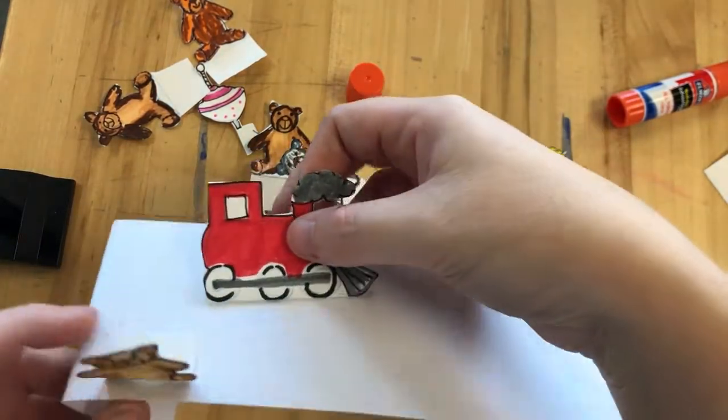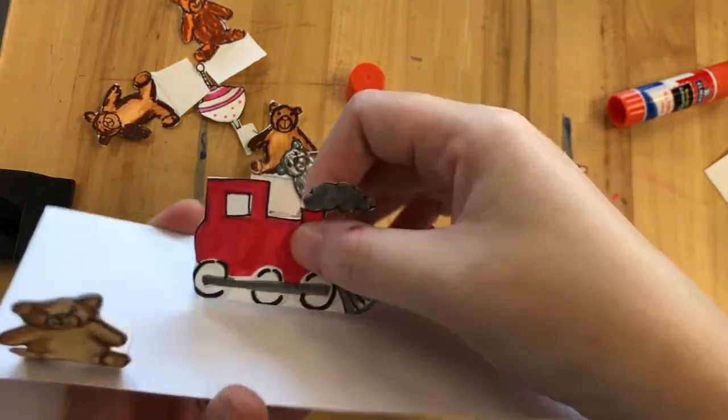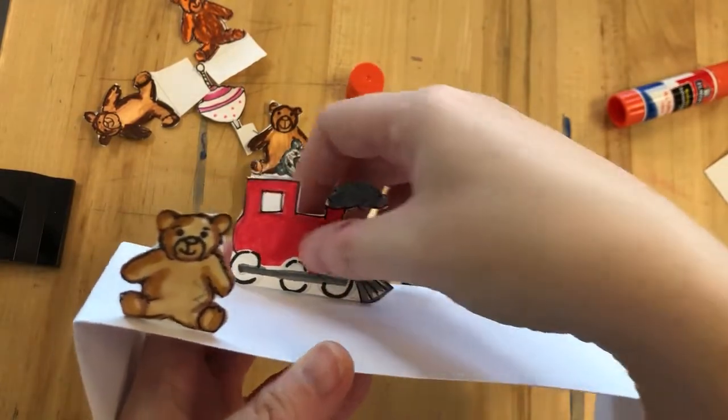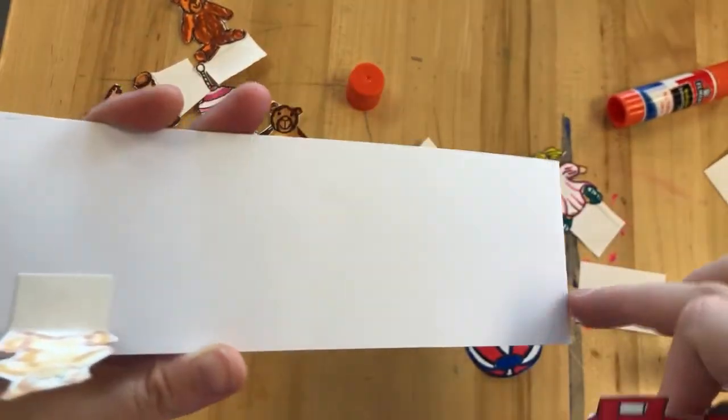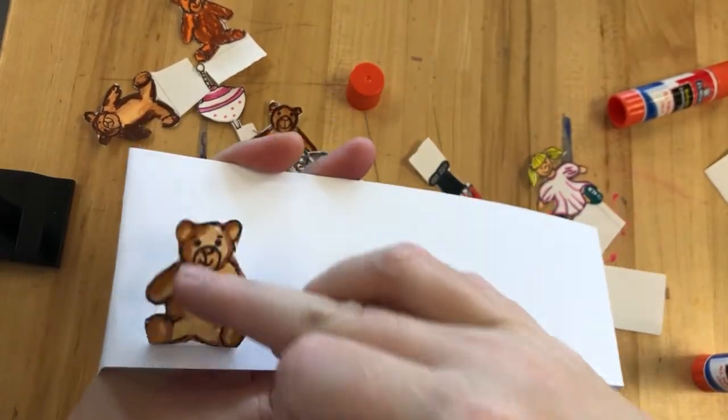I also wouldn't put them right at the back of the shelf because they'll kind of disappear into the background. Look at the first third of your shelf as the area you want to be gluing down your toys.